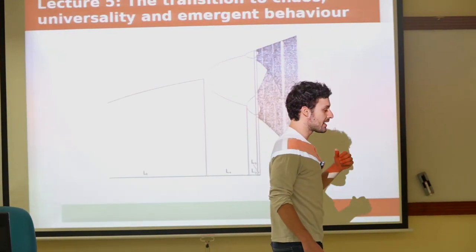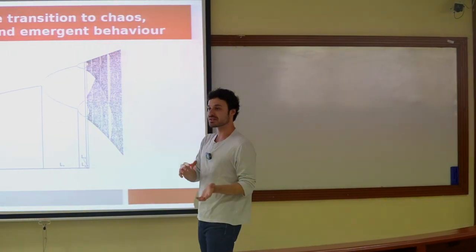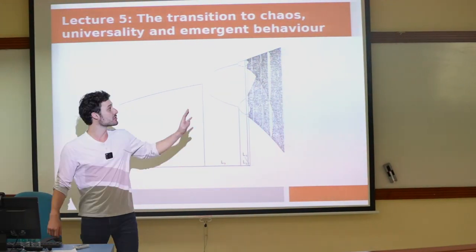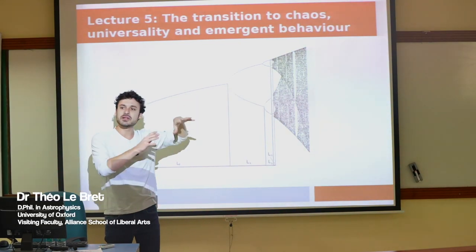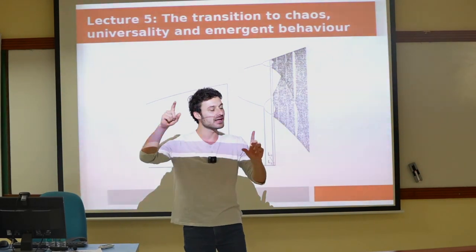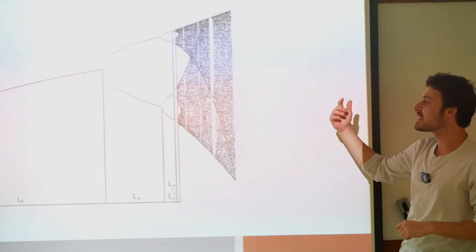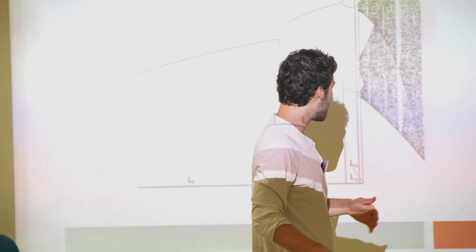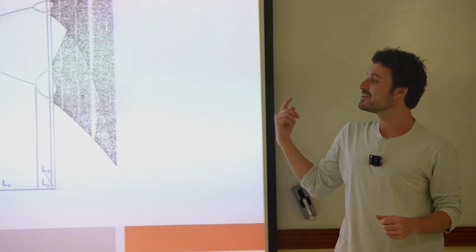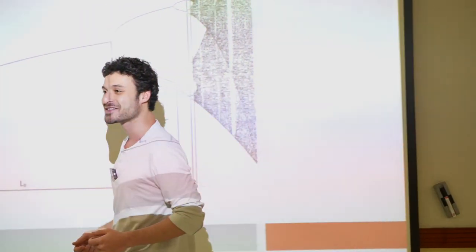Today we're focusing on broad generic traits of how you go from a non-chaotic system to a chaotic system — what's known as the transition to chaos. We've seen a bit of this in the first couple of lectures, where we looked at period doubling in nonlinear systems and how that can lead a system to become chaotic. We'll revisit the logistic map, the Lorenz system, and introduce the transition to turbulence, a problem that has troubled physicists for a very long time.